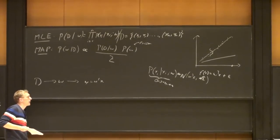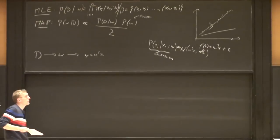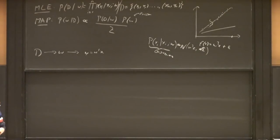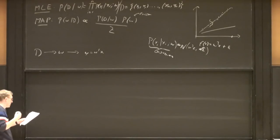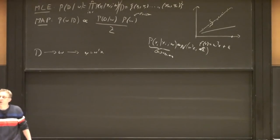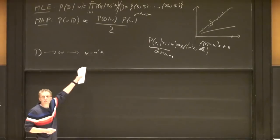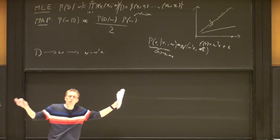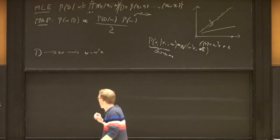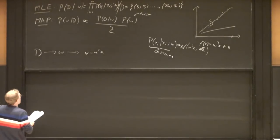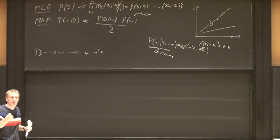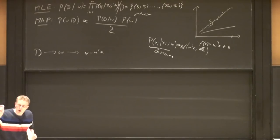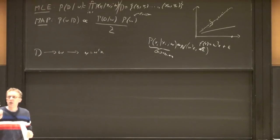It turns out we can do something far more beautiful if we put on our Bayesian hats. Bayesians say: you're only using W to make predictions. At the end of the day, once you've made predictions, no one cares about what W you used. So why not, instead of modeling the probability of W and then making predictions, directly model the prediction of a test point from the start?